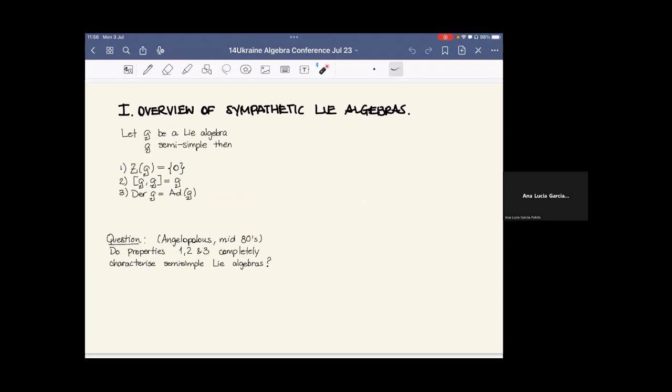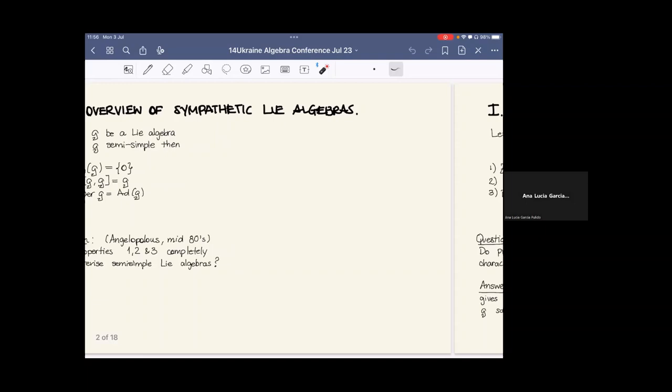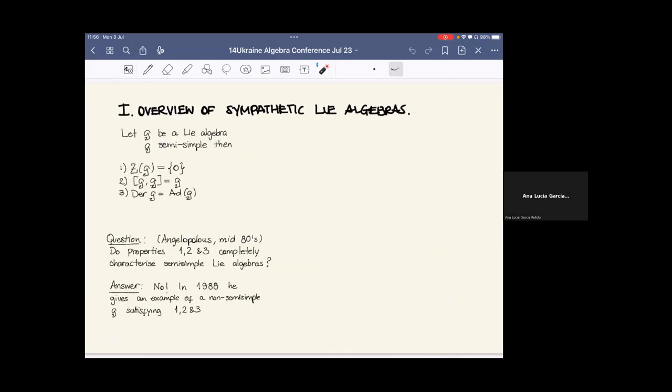Angelopoulos in the mid 80s asks whether these three properties completely characterize semi-simple algebras. The answer to this is no. In 1988, Angelopoulos himself built an example of a non-semi-simple algebra that satisfies one, two and three.